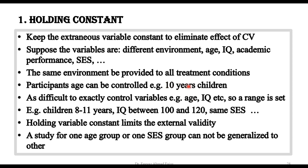However, it is difficult to exactly control variables — for example, finding a class where every child is exactly 10 years old with no child younger or older is unrealistic. So to handle this, we select a range instead. For example, rather than requiring exactly 10 years, we say all children between 8 to 11 years of age will be in my experiment, which gives us a bit of flexibility.